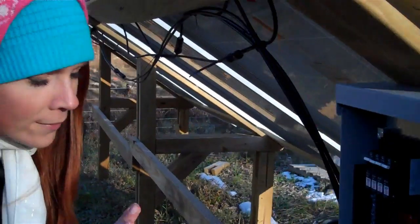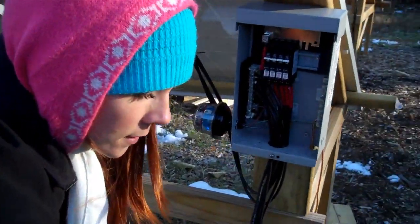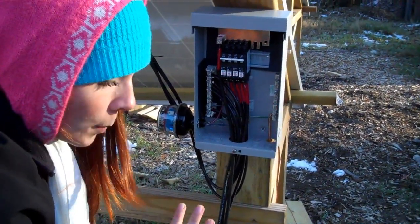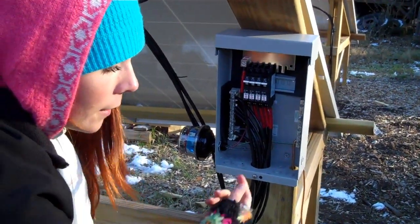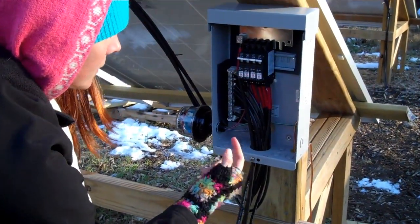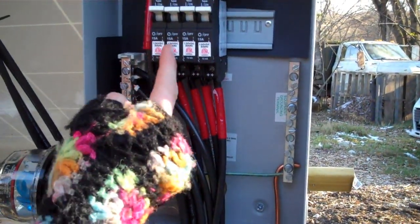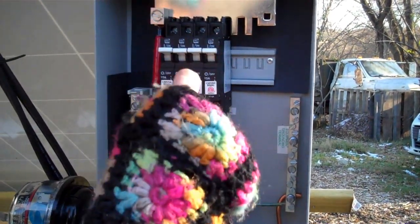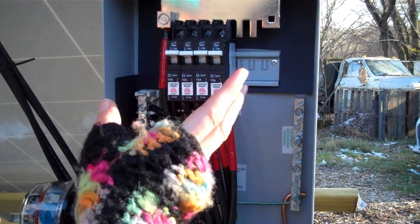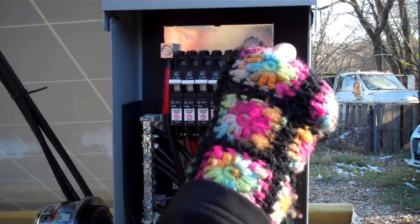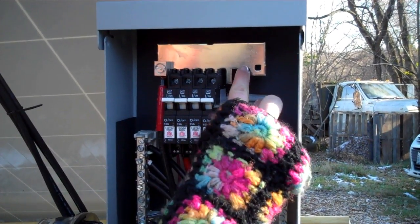But as I mentioned before, we have 8 panels. They're seriesed into pairs. So 4 pairs, each having a positive and a negative wire, all feeding back to this combiner box. So we have 4 positive wires, all leading up into our 15 amp breakers, so that we can cut power from the panels immediately if we needed to. And then those are all converging together on this bus bar up top.